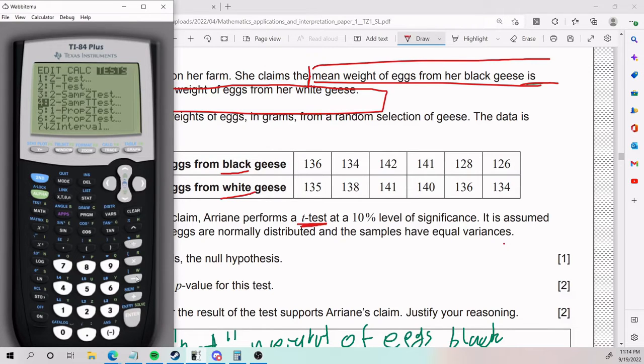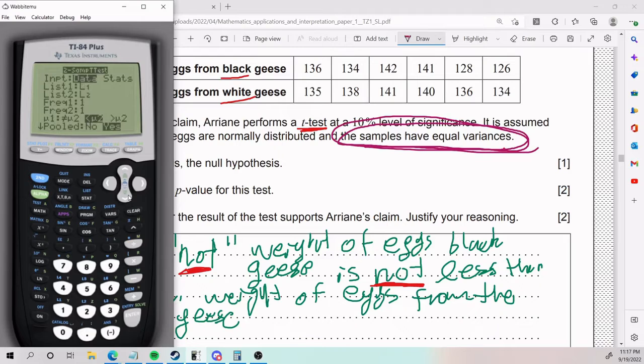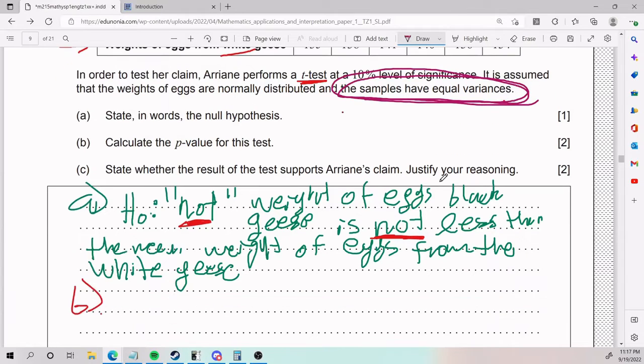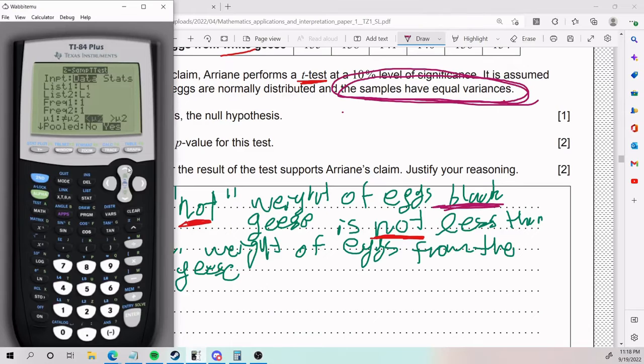Stat, tests, two-sample t-test, and here we are. For this mu symbol, we're going to put the one in the middle. Why are we putting the one in the middle? Because the null hypothesis is that mean weight from the white geese is not greater than the one from the black geese. White geese was my second list. So since it's not, we're going to test it like that. Is it pooled? We're going to put yes. Calculate.